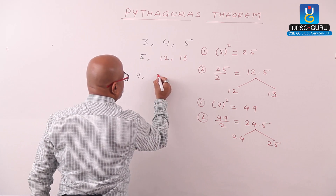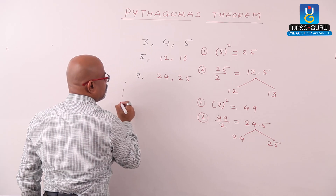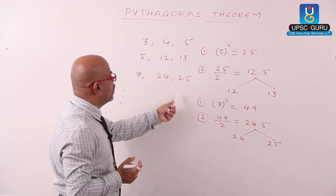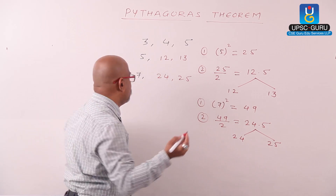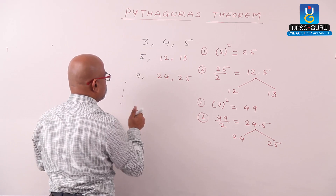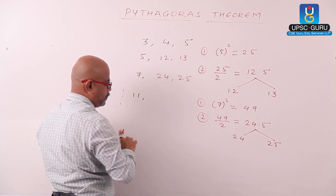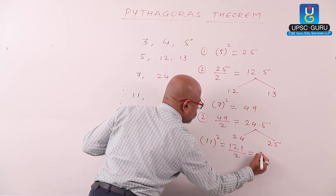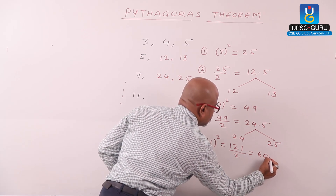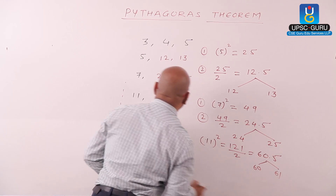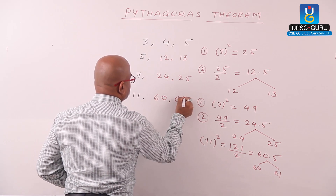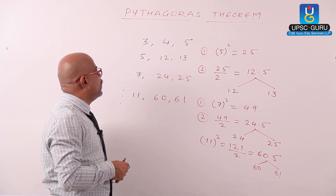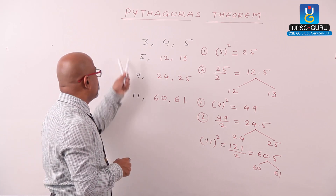49 divided by 2 gives us 24.5, which is the value between 24 and 25. Therefore the remaining two numbers are 24 and 25. Let us try one more: 11. We know 11 squared equals 121. Divide by 2 gives 60.5, which is between 60 and 61. So the remaining two numbers are 60 and 61. This is one shortcut method to find Pythagorean triplets when the smallest number is odd.